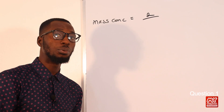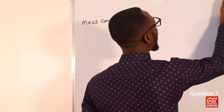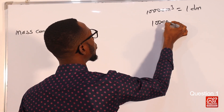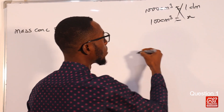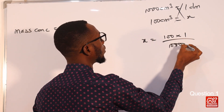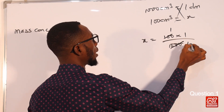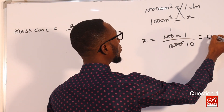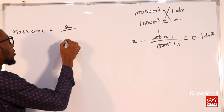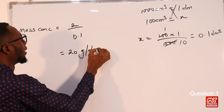Remember, the volume here should be in dm³ but we are given the volume in cm³. Recall that 1000 cm³ equals 1 dm³. Therefore, 100 cm³ equals 0.1 dm³. So that would be 2 divided by 0.1, which gives us 20 g/dm³.